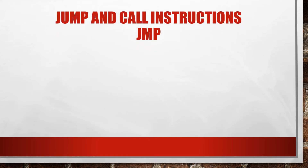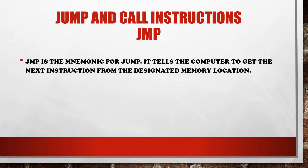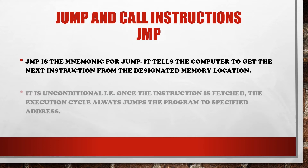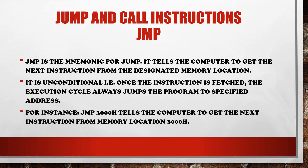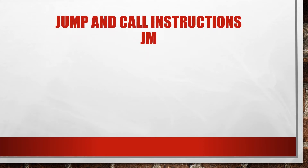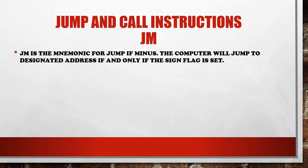One of the jump instructions is JMP. JMP is the mnemonic for jump. It tells the computer to get the next instruction from the designated memory location. It is unconditional — that is, once the instruction is fetched, the execution cycle always jumps the program to a specified address. For instance, JMP 3000H tells the computer to get the next instruction from memory location 3000H. That is all about the JMP instruction.